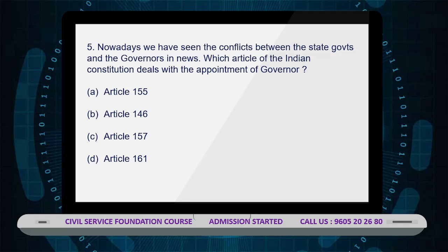The Governor is appointed by the President for a term of five years. Citizens above 35 years of age are eligible for the office. The executive power of a state is vested in the Governor. The Governor shall have the power to grant pardons, reprieves, respites, or remissions of punishment, or to suspend, remit, or commute the sentence of any person convicted of any offense against any law relating to a matter to which the executive power of the state extends.